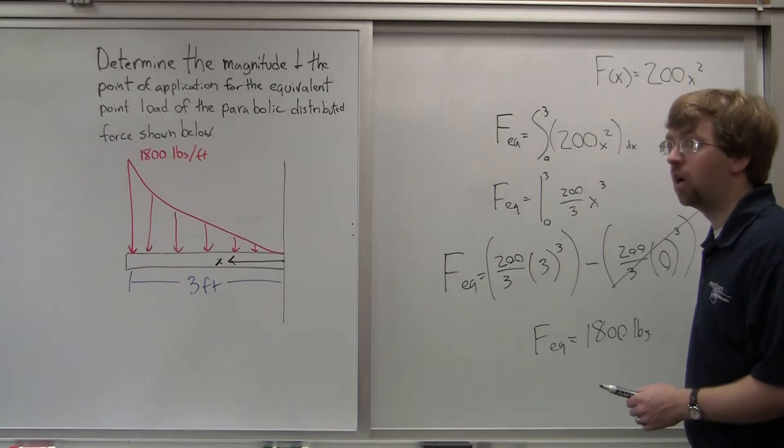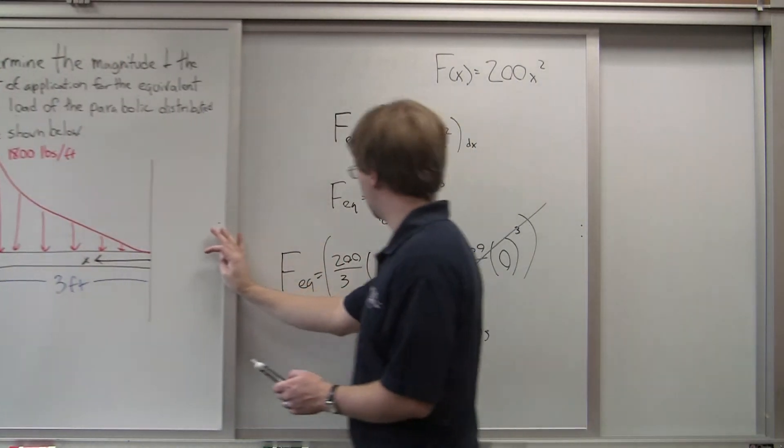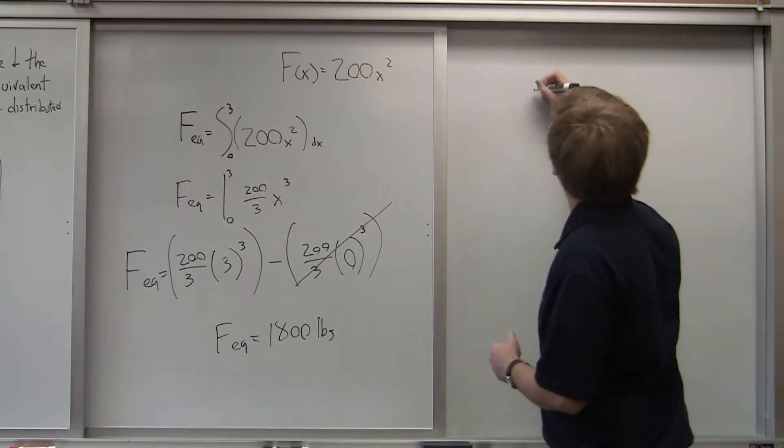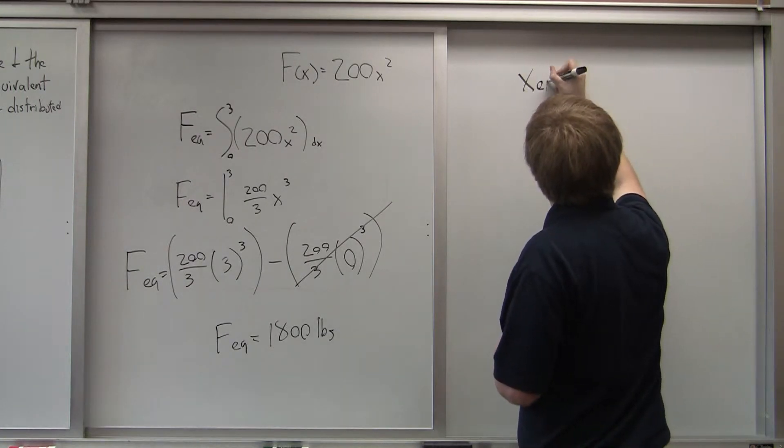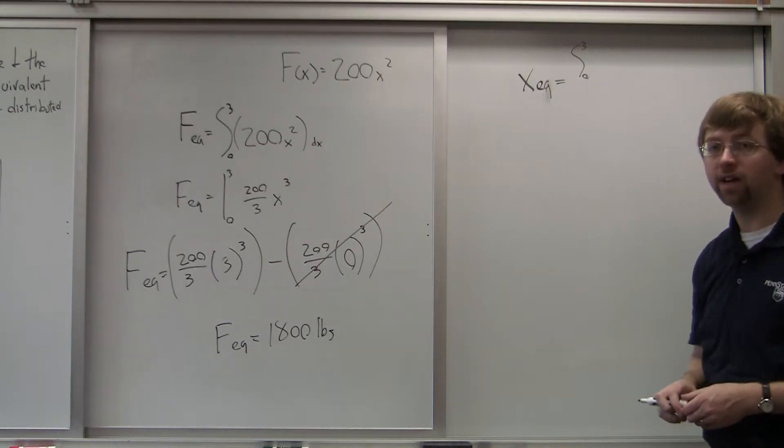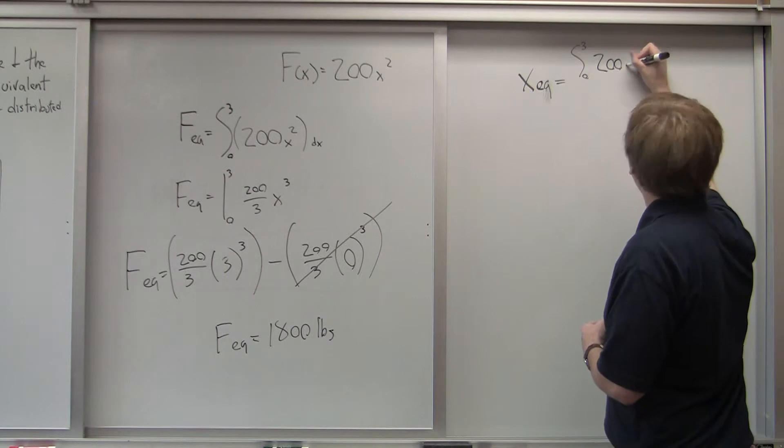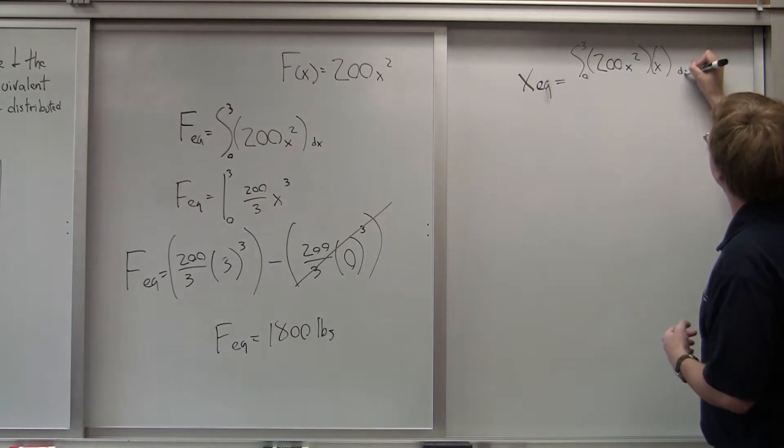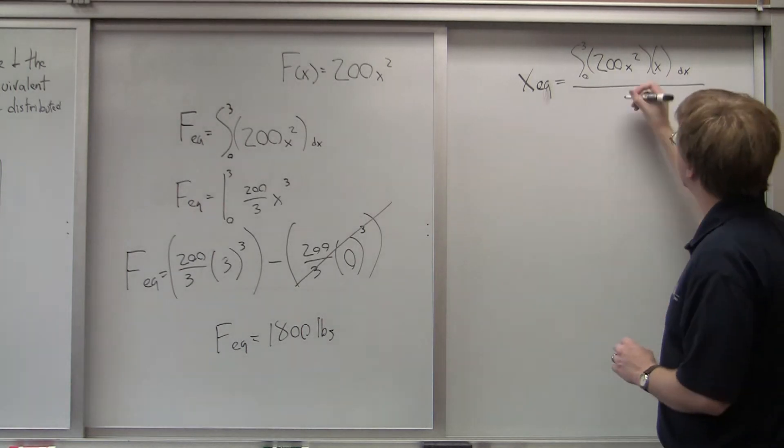So next we need to find x e q. So that's the location of the force. So for this, x e q is going to be the integral from 0 to 3 of f of x, which is 200 x squared, times x dx. And that whole thing is going to be divided by the magnitude of our equivalent point load, so f e q.